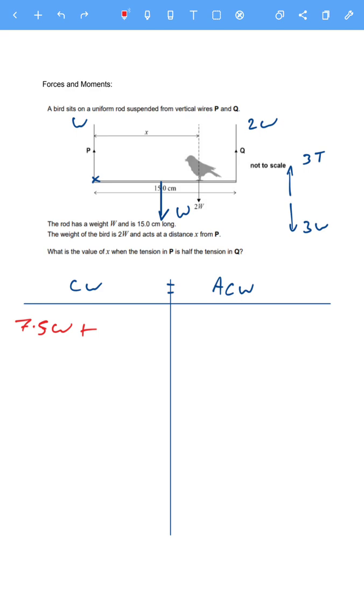Plus what else is clockwise? We've got this 2W times X, so that would also be clockwise. Plus 2WX. That's it for clockwise. For anticlockwise, we've got this force Q which is pulling upwards, so that would pull anticlockwise. So we've got 2W times 15, or 15 times 2W. 15 times 2 is 30, so 30 lots of W.